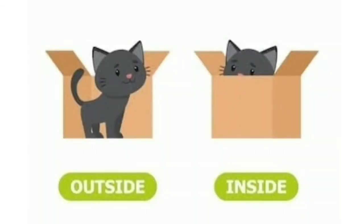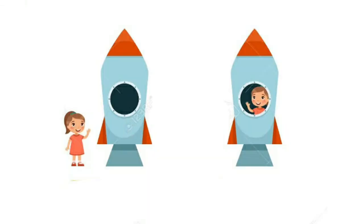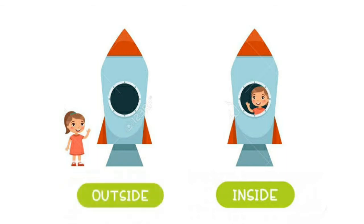Now children, look at this picture. The cat on the left side is outside the box and the cat on the right side is inside the box. Look at this picture carefully — tell me who is inside the rocket. Yes, the girl on the right side is inside the rocket and the girl on the left side is outside the rocket.